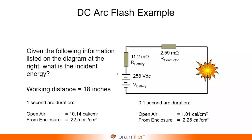I want to show you an example of a DC arc flash analysis. In this example, we have a 258 volt DC battery system. The battery has an 11.2 milli-ohm internal resistance, which you can obtain from testing. There is a conductor resistance of 2.59 milli-ohms, and we want to know what the incident energy would be.